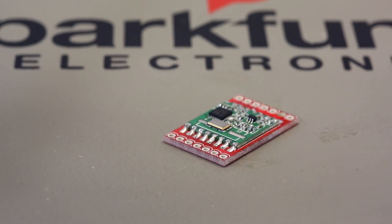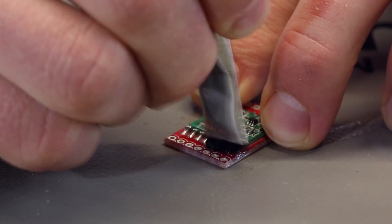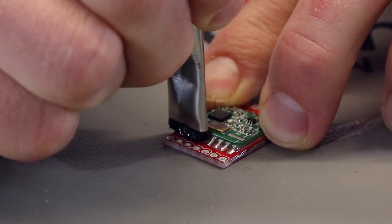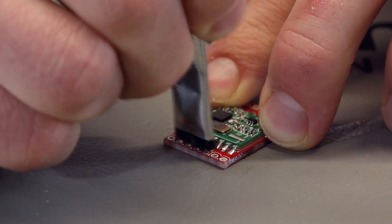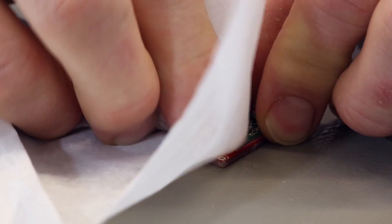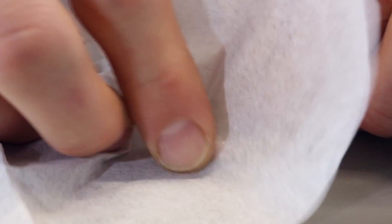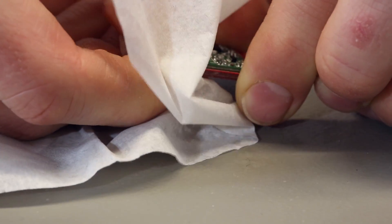Finally, take some of the alcohol, scrub again because we're using flux. Inspect your board to make sure that you've removed all of the flux residue and that your joints are nice and shiny and clean.